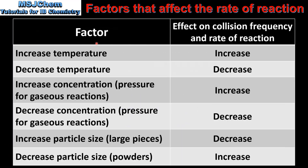Let's end with a summary. In this table we have the change in the factor and its effect on collision frequency and rate of reaction. An increase in temperature results in an increase in collision frequency and the rate of reaction; a decrease in temperature results in a decrease in both. An increase in concentration or pressure for gaseous reactions results in an increase in collision frequency and rate of reaction; a decrease results in a decrease in both. Increasing particle size results in a decrease in collision frequency and the rate of reaction, while decreasing particle size results in an increase in both.